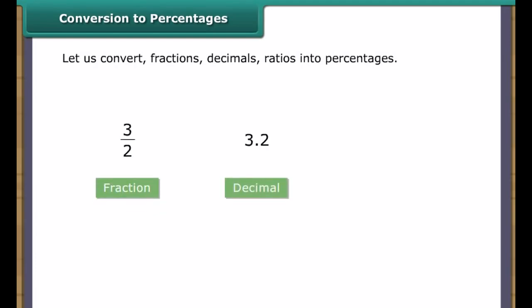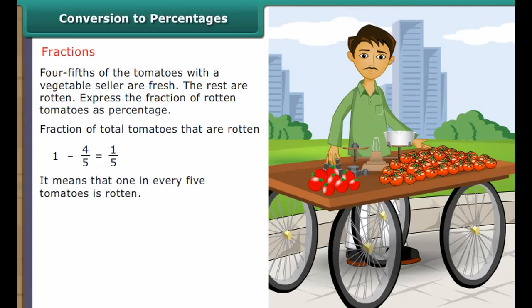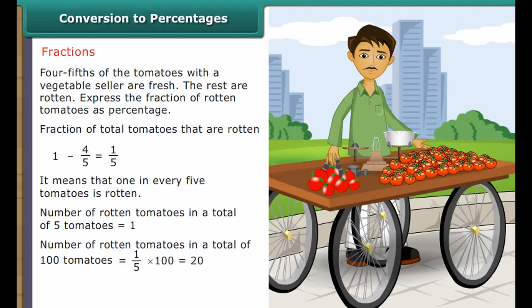Conversion to percentages. We have learned to express numbers as percentages. Let us now learn to convert fractions, decimals and ratios into percentages. Fractions: four-fifths of the tomatoes with a vegetable cellar are fresh; the rest are rotten. Fraction of rotten tomatoes equals 1 minus 4/5, which equals 1/5. Number of rotten tomatoes in 100 equals 1/5 into 100, which equals 20. Therefore, 20% of the total tomatoes are rotten.